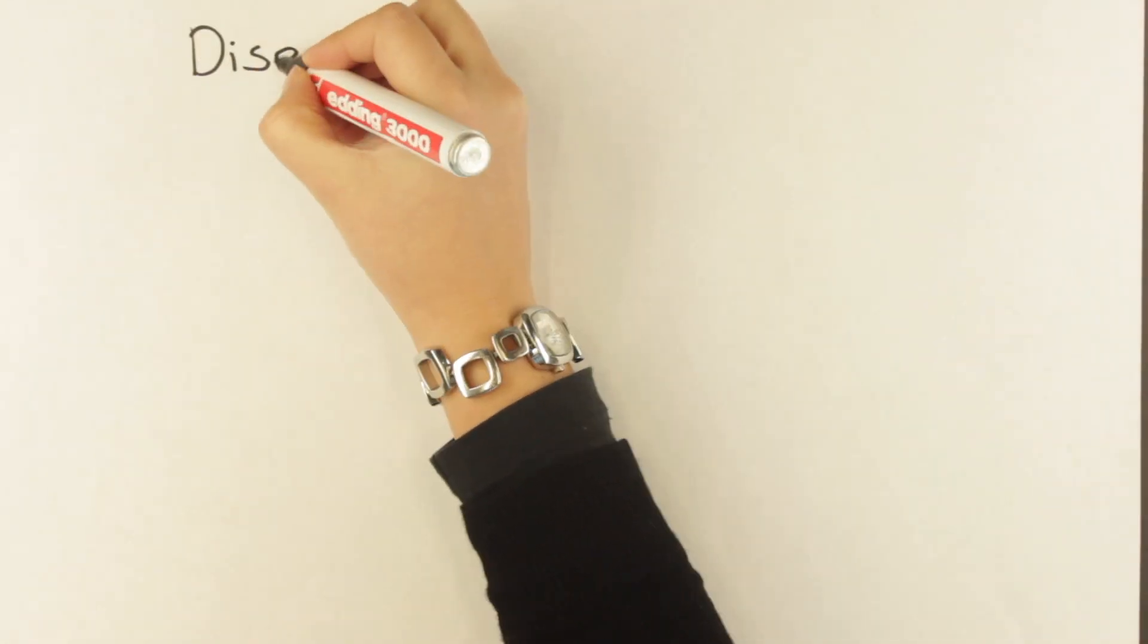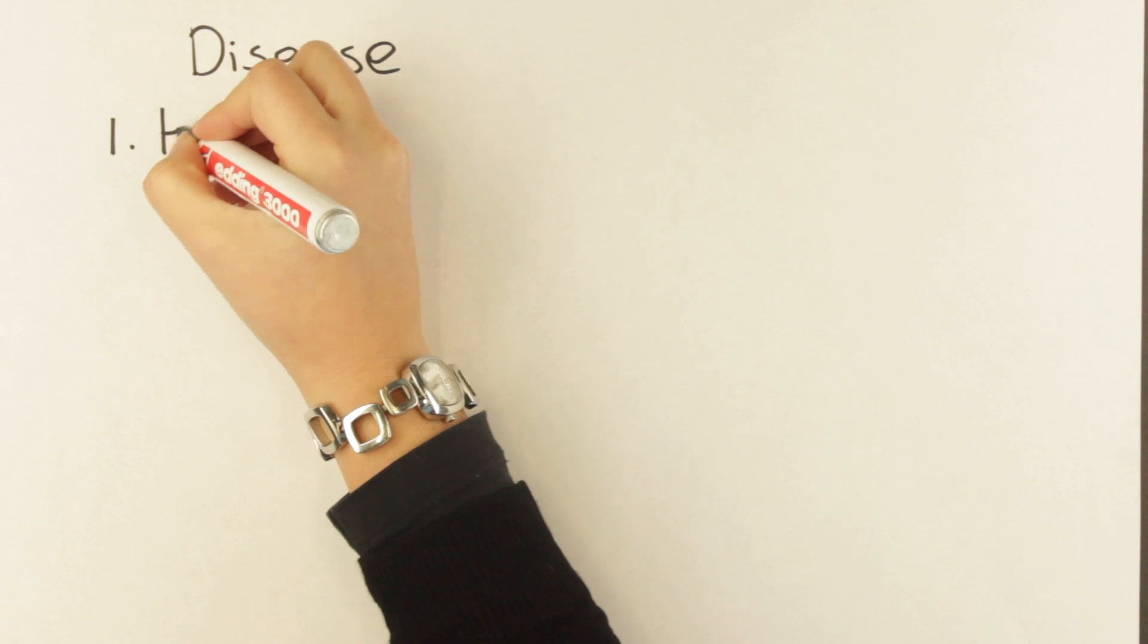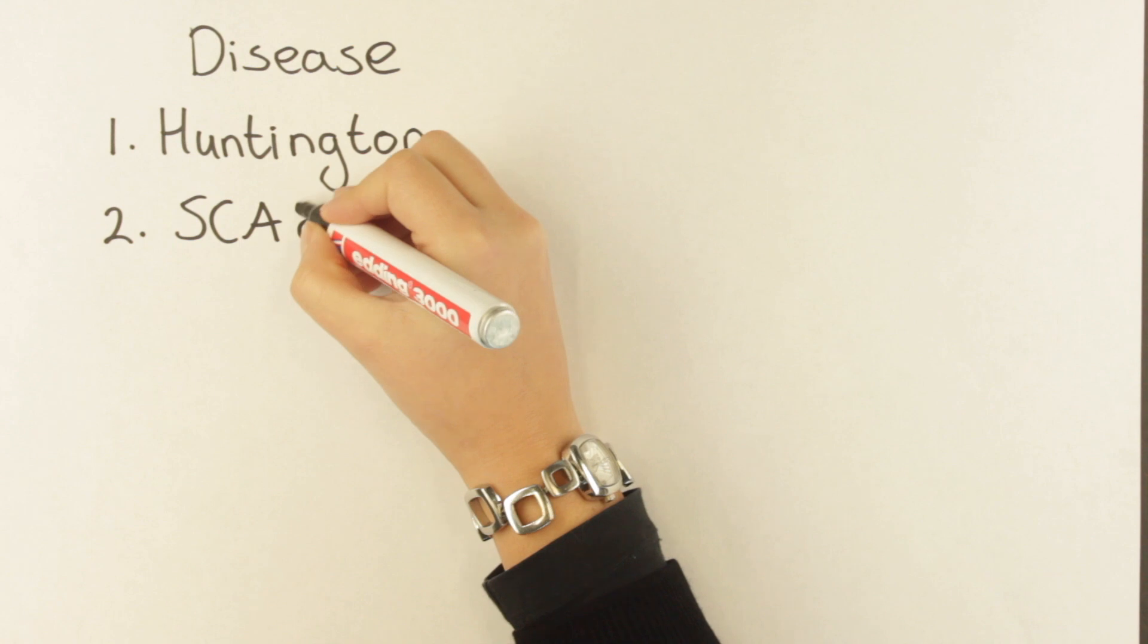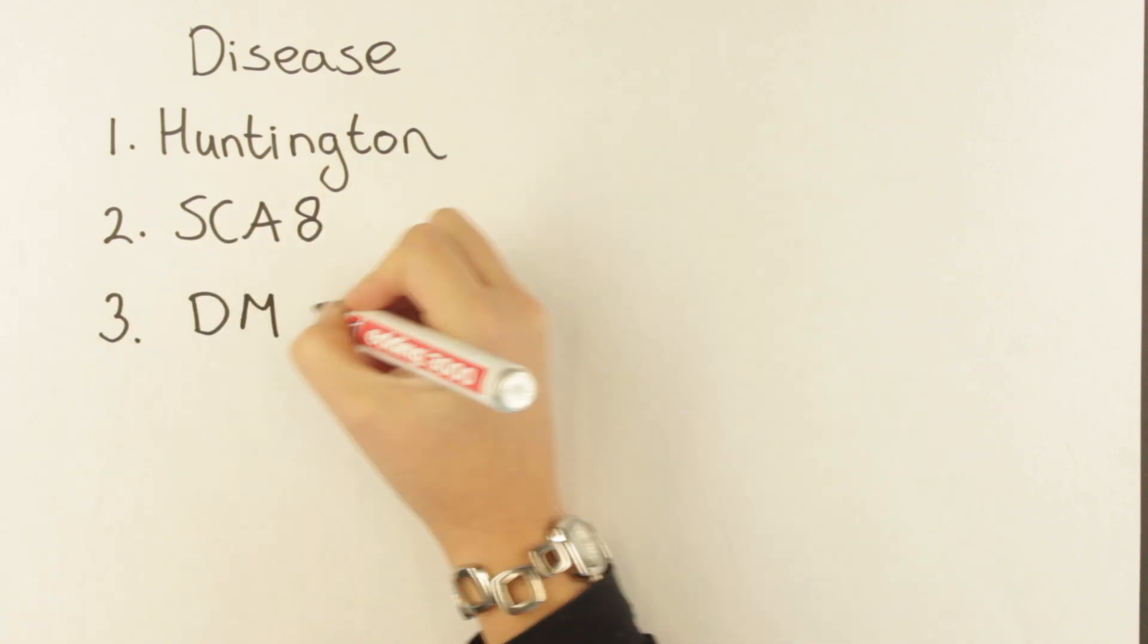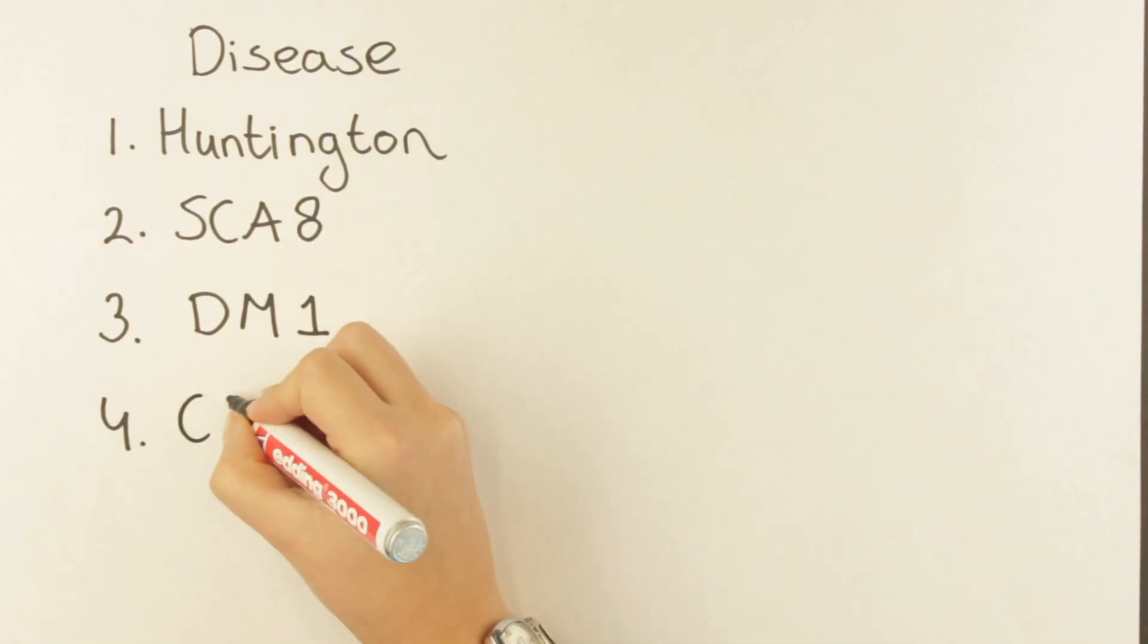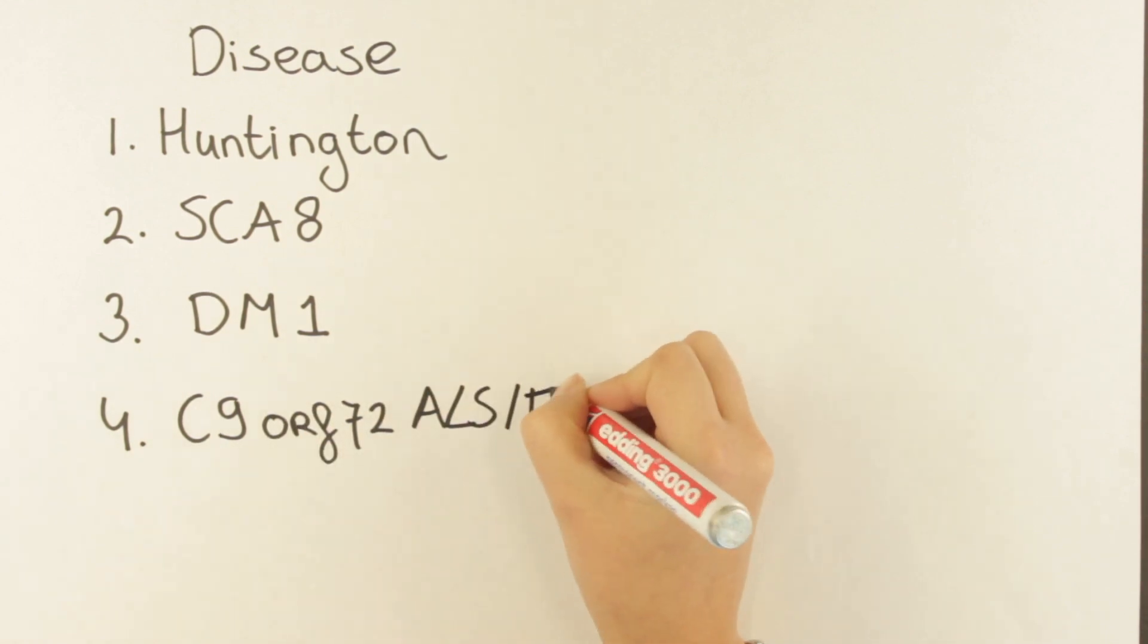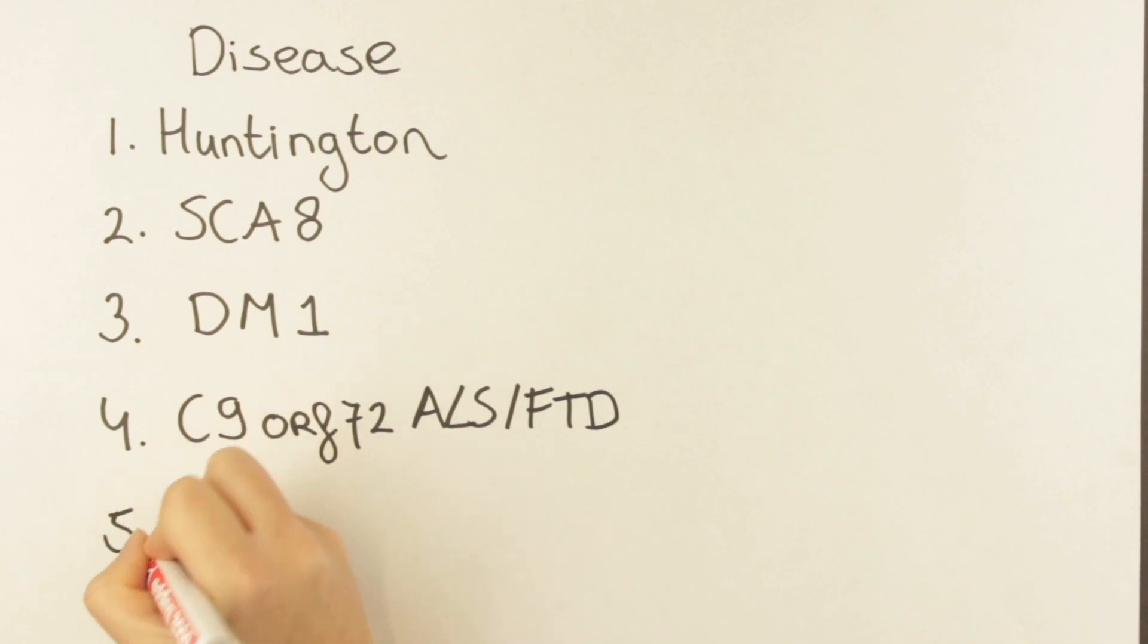Many brain diseases are caused by RAN translation, for example Huntington disease, spinocerebellar ataxia type 8, myotonic dystrophy type 1, C9 ORF-linked amyotrophic lateral sclerosis and frontotemporal dementia, and last but not least Fragile X-associated tremor and ataxia syndrome.